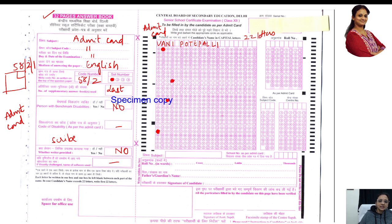After filling V-A-N-I, leave one box for the space, then start Potepalli: P, then O. Fill each bubble completely, please. I am using my bare hand, that is why it looks a bit unclear.